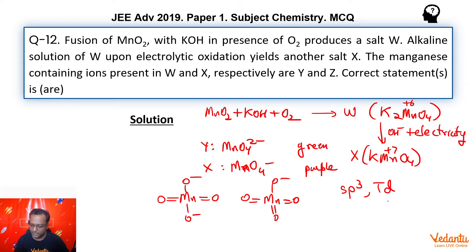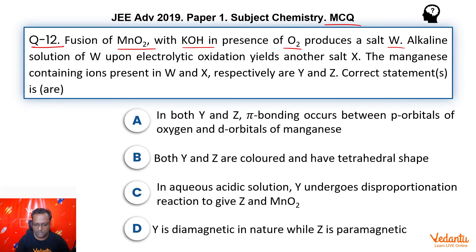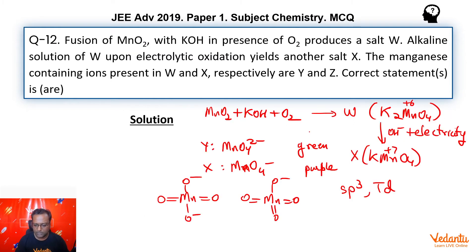Let's go to our question and see the options. In both Y and Z, pi bonding occurs between p orbitals of oxygen and d orbitals of manganese. So sp3, this is d3s hybridization. In d3s hybridization, all the sigma bonds are formed already. We have to form pi bonds now. Pi bonds will be formed between oxygen's 2p orbital and manganese here is in plus 7 oxidation state, that's d0. So it has still d orbitals empty to form the pi bonds which it can use.